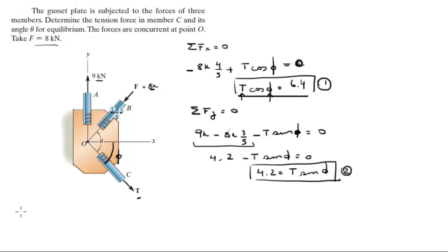If you divide my second equation by my first equation, basically you're dividing this by this. You get that T sine phi is equal to 4.2 and T cosine phi is equal to 6.4. The T is cancelled out, and sine phi over cosine phi is tangent of phi, which is equal to 4.2 over 6.4.